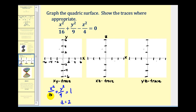This would be an ellipse where the major axis is horizontal and the minor axis is vertical, and the center is at the origin. Here we have a squared equals sixteen, so a is four. We'll go four units to the right and four units to the left to determine the endpoints of the major axis, and then up and down three units to determine the endpoints of the minor axis. Remember, this is not the exact xy trace — it's the z equals two trace, but it is parallel to the xy trace.